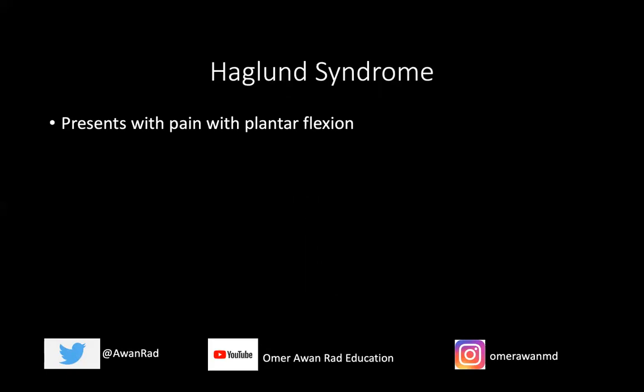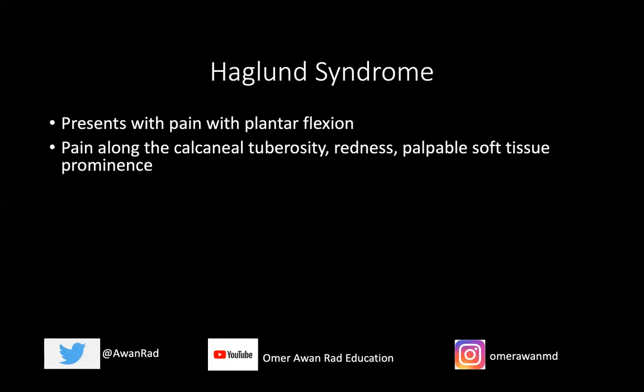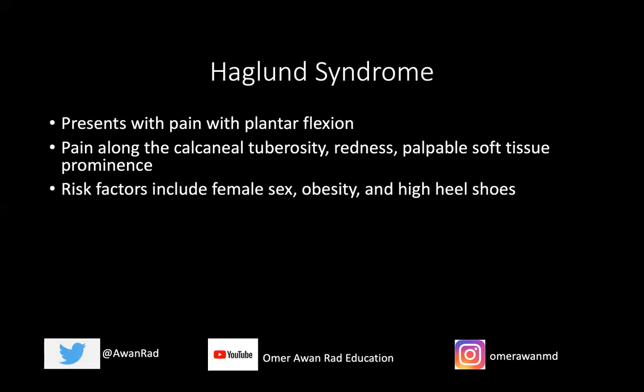Haglund syndrome usually presents with pain with plantar flexion at the level of the ankle. There's often pain at the calcaneal tuberosity along the posterior superior calcaneus where the Haglund deformity is. There can sometimes be redness, erythema, and soft tissue prominence at that site. The risk factors are female sex, patients that are overweight, and those that wear tight-fitted or high-heeled shoes. Often, if the patient stops wearing high-heeled shoes, Haglund syndrome gets much better.